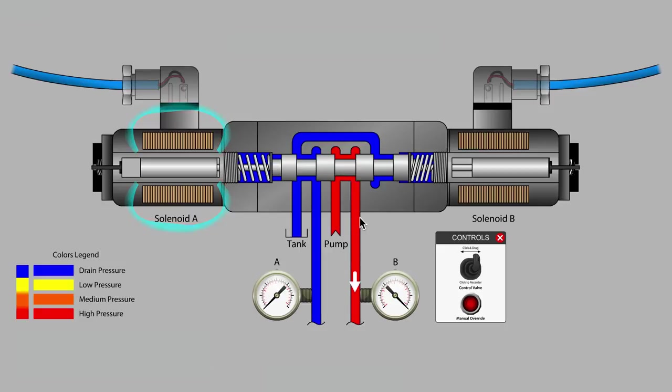Did you notice that as the valve spool moved to the right that the pushpin and armature in solenoid B were moved to the right as well?